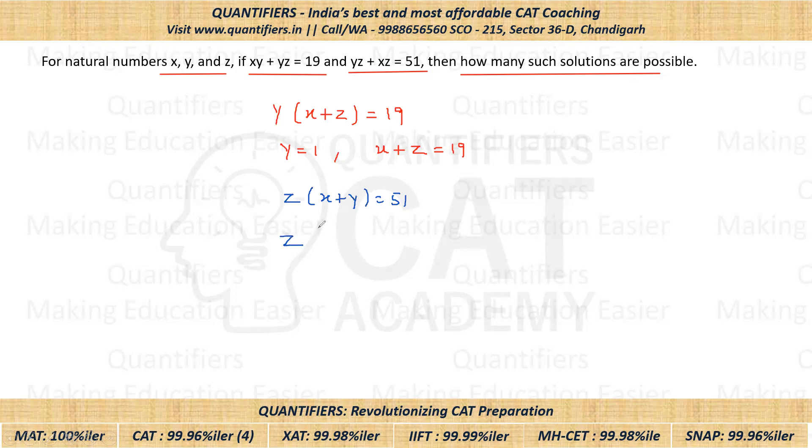So let's put y equals 1 in place of y. So basically I have this equation now: z times (x plus 1) equals 51. So now I will solve this. z times (x plus 1) equals 51.